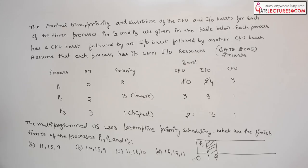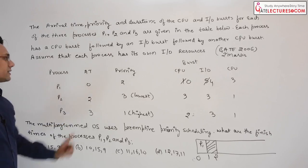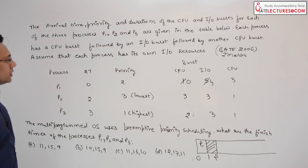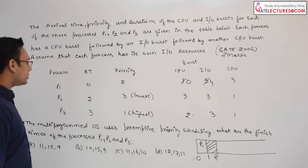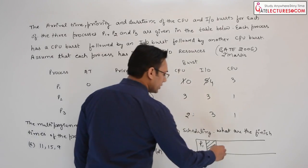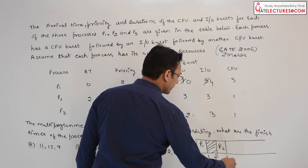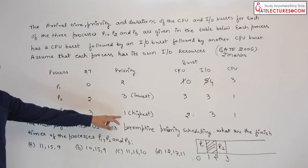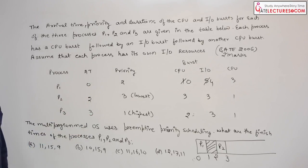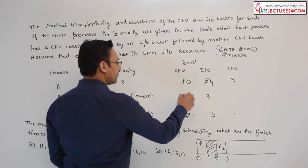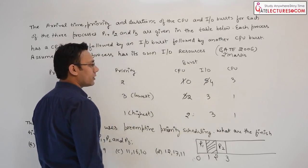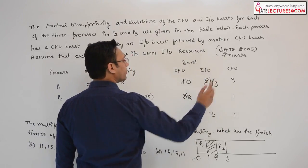At time unit 2, process P2 arrives. Even though P2 has the lowest priority, at this moment only P2 is available to execute on the CPU. So we will execute process P2 till time unit 3, because at time unit 3 a new process P3 is coming and P3 has higher priority than P2. Till time unit 3, P2 will finish 1 unit of CPU time and P1 will also finish 1 unit of IO time.